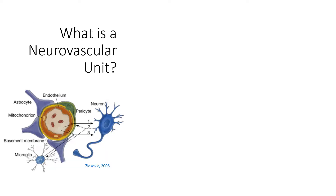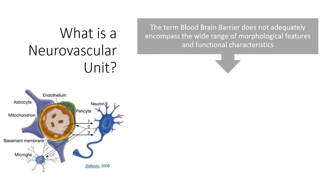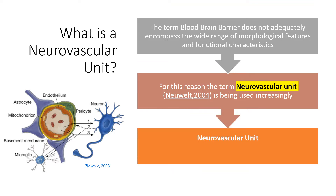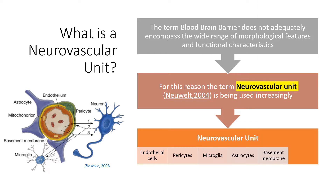The term 'blood-brain barrier' does not adequately encompass the wide range of morphological features and functional characteristics. For this reason, the term 'neurovascular unit' was coined by Neuwelt in 2004. The neurovascular unit constitutes endothelial cells, pericytes, microglia, astrocytes, the basement membrane, and tight junctions along the endothelial cells.